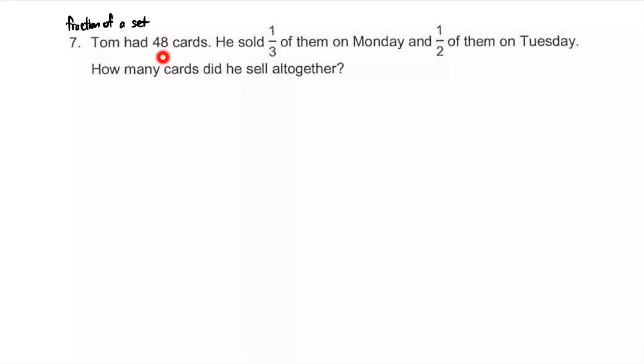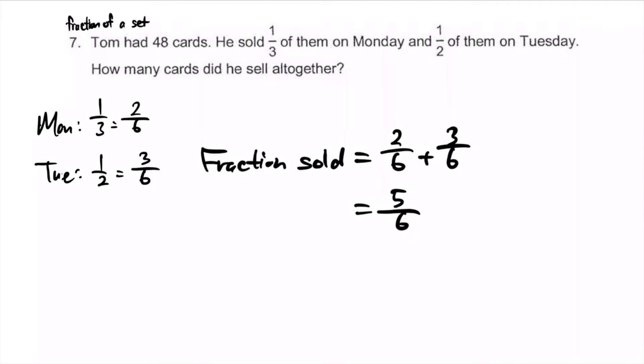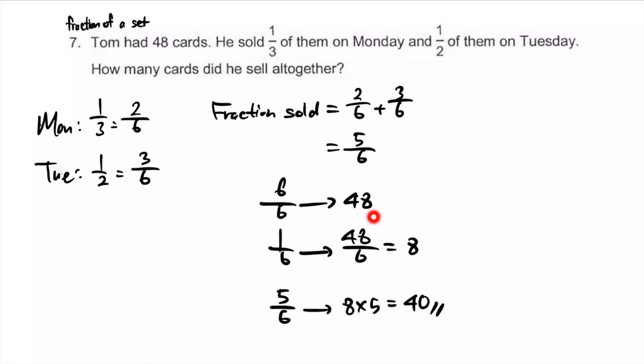The total is 48. One third of that, 38 sold on Monday. Half of the same total, 48, sold on Tuesday. How many cards did he sell altogether? For Monday, one third was sold, which is 2/6. On Tuesday, half was sold, also 3/6. The total fraction sold was 5/6. But we want the number of cards. If 6/6 is 48, then 1/6 is 8. We're interested in 5 units, so that's 8 times 5, equals 40. There are faster ways, but I'm doing it in a clear way, though slightly slower, but hopefully clear.